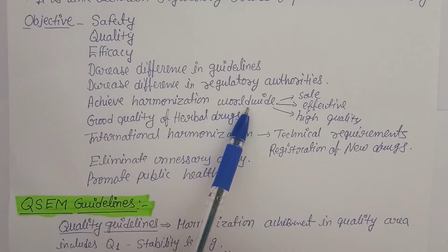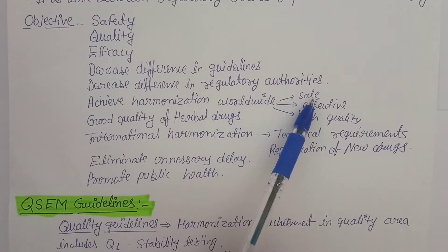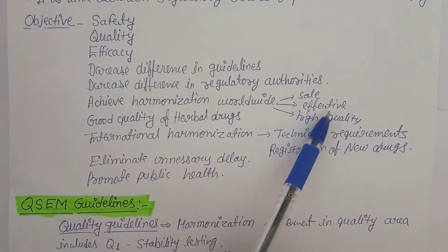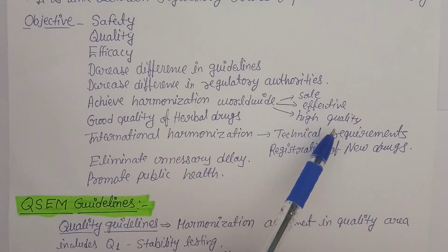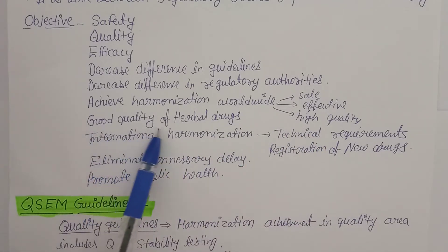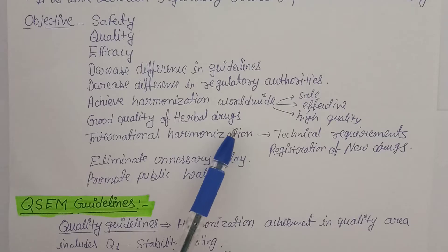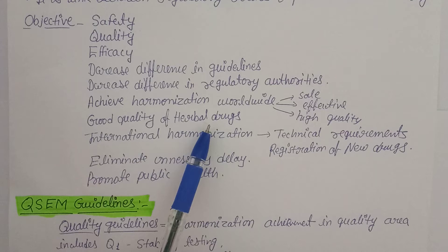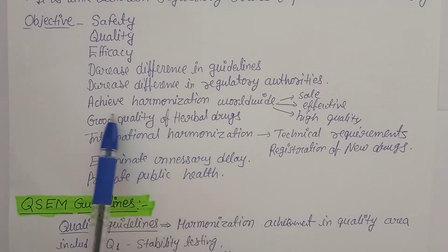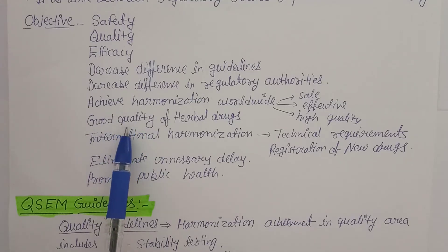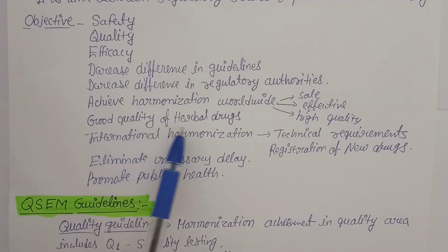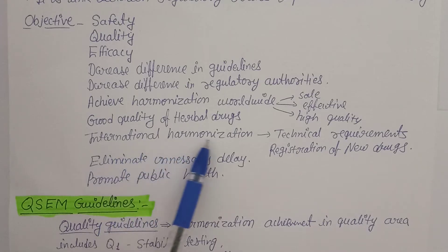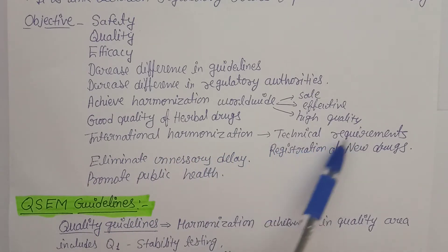The name itself — International Conference on Harmonization — indicates that it should achieve harmonization worldwide in terms of sales, effectiveness, and quality of medicaments and herbal drugs. Good quality of herbal drugs is the core intention of this governing body. Whatever herbal drugs enter the market should not compromise on quality; strict screening of quality and safety parameters ensures this.